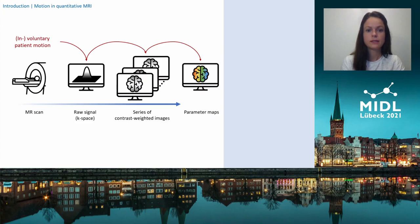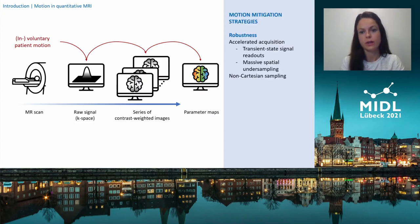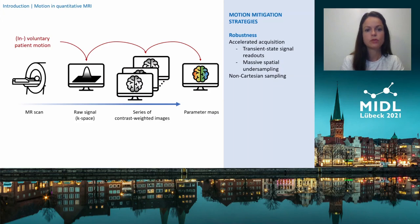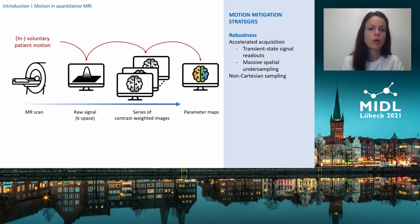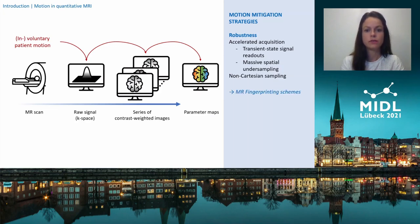In this context, recent research efforts towards faster acquisition schemes are an important step to reduce susceptibility to motion in the first place. Non-Cartesian sampling schemes have also shown to be more robust to motion than Cartesian readouts. The high acceleration factors that can now be achieved often rely on massive spatial undersampling or signal acquisitions in the transient instead of the steady state, or a combination of these approaches — as in the case of MR fingerprinting, short MRF, or other fast transient state methods such as quantitative transient state imaging (short QTI), which is the basic framework in this work.